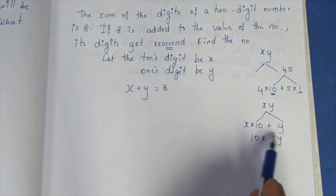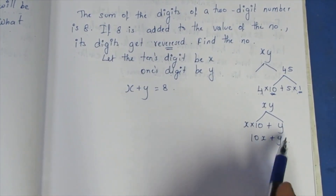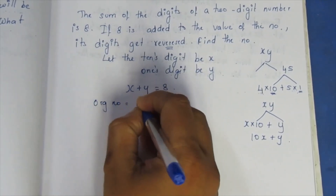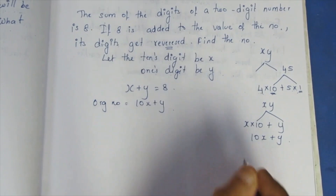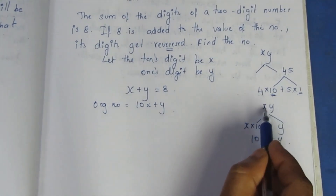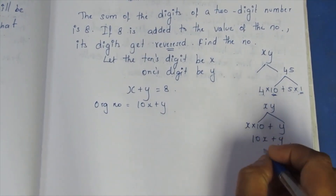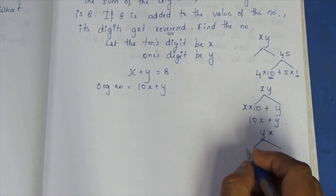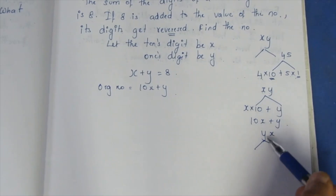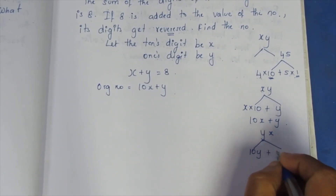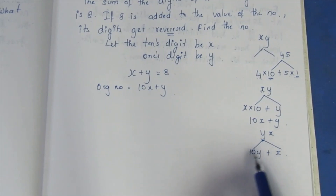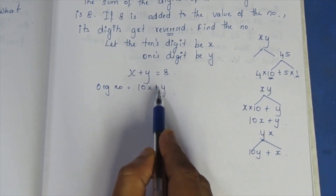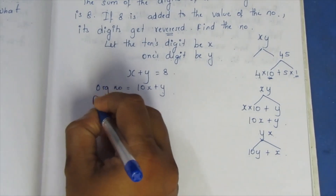When the digits are reversed, the number becomes yx. So the reversed number is y in the tens place and x in the ones place, which is y × 10 + x × 1, giving us 10y + x. This is the reversed number.